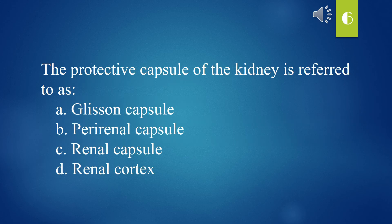The protective capsule of the kidney is referred to as: A. Glycine capsule. B. Prerenal capsule. C. Renal capsule. D. Renal cortex. The answer is C. Renal capsule.